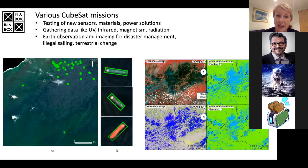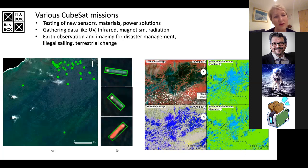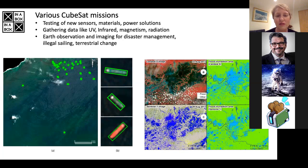Also, of course, gathering data like ultraviolet, infrared, magnetism, or radiation — really deploying sensors, gathering that data, and then communicating that with the ground station. And earth observation and imaging for disaster management, illegal sailing, and terrestrial change.